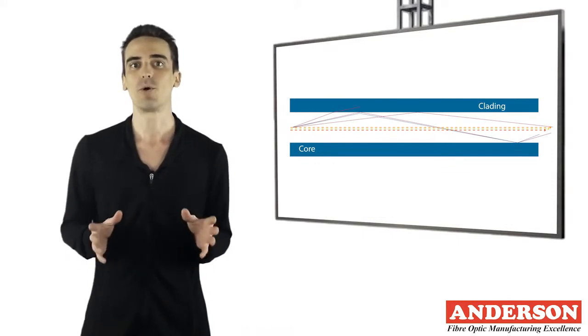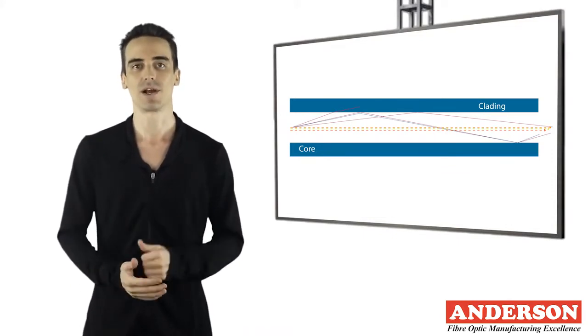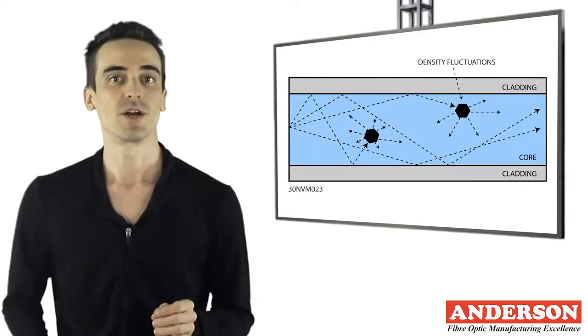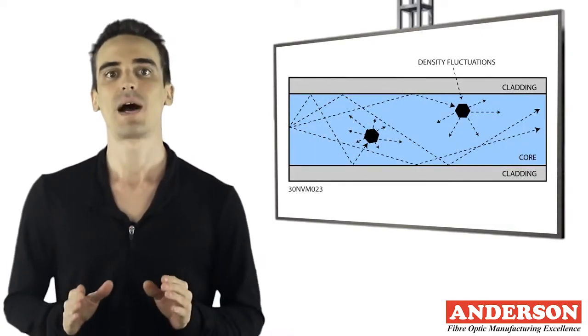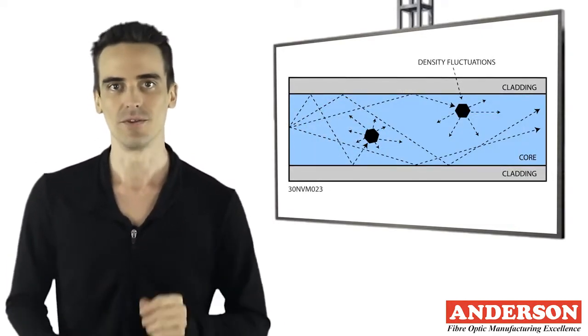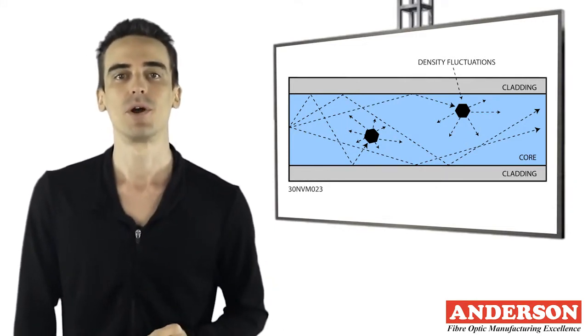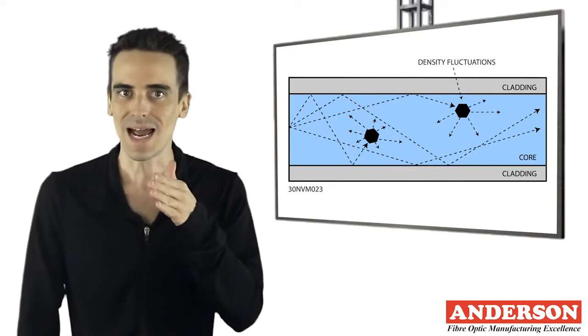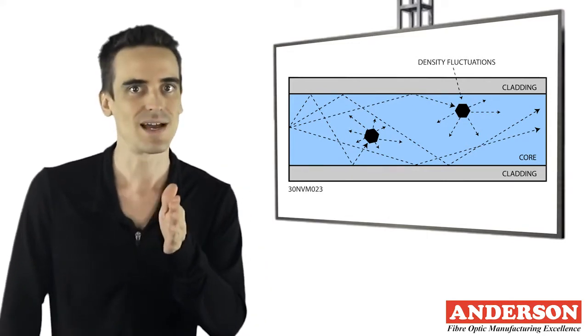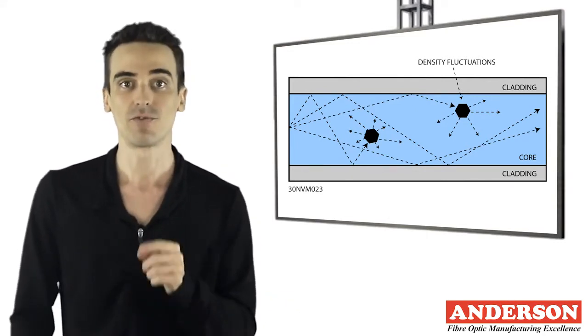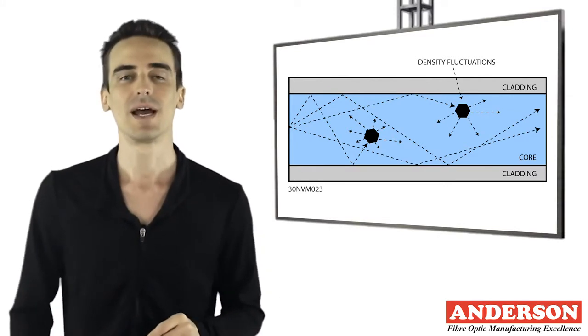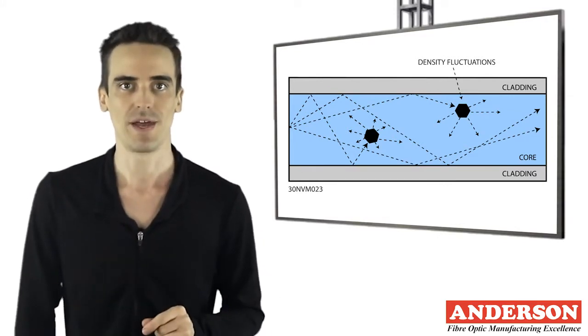Modal dispersion occurs because some paths through a fiber optic are more direct than others. If one of the light rays goes right down the middle of the fiber while others enter the fiber at angles and bounce from side to side, it's clear to see that the light ray going down the middle of the fiber has a significantly shorter path and will reach the far end considerably sooner than the other ray of light. This causes a data pulse to spread.